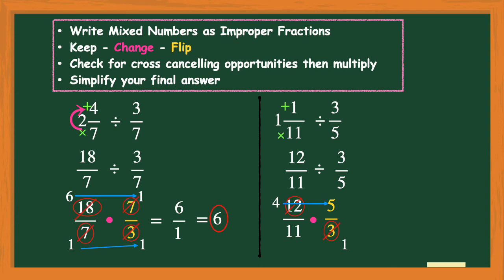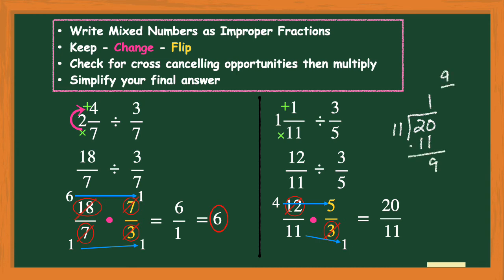Multiply the numerators: 4 × 5 = 20. Multiply the denominators: 11 × 1 = 11. I have an improper fraction of 20/11, so I need to simplify it by dividing: 11 goes into 20 one time with 9 remaining. The remainder of 9 becomes the new numerator and the denominator of 11 stays the same, so 20/11 simplifies to 1 and 9/11.